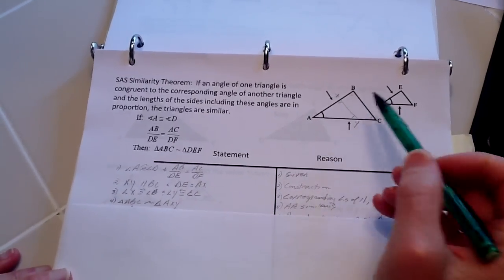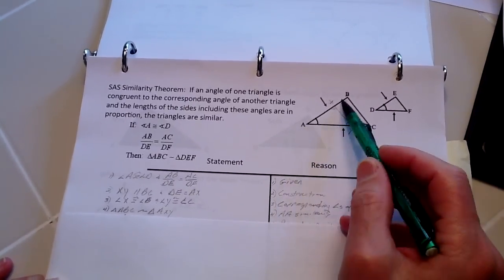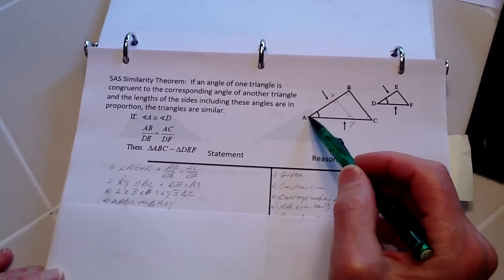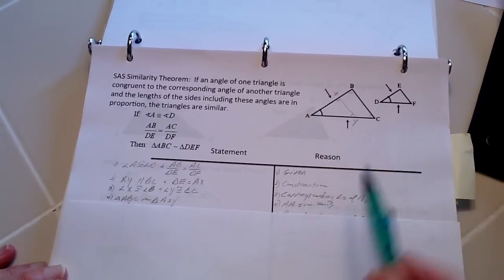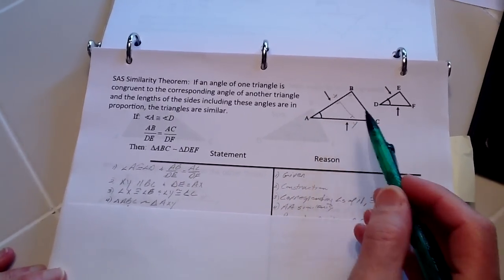So from that, I know that triangle ABC is now going to be similar to AXY because of angle-angle similarity.